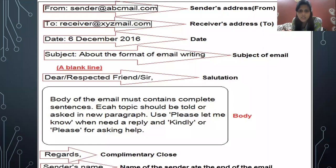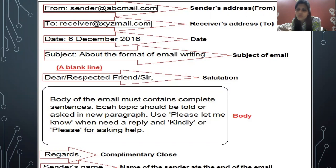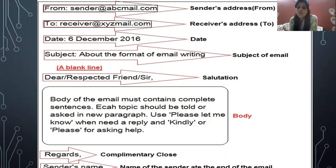Here again is the format of writing an email. You can see: From — the sender's ID (person's name @ email provider), To — the receiver's email ID. Then instead of writing CC or BCC you can write Date, then the subject. Salutation: 'Dear Sir,' 'Dear Ma'am,' or 'Dear [friend's name],' 'Dear Grandma,' 'Dear Mom,' whatever is applicable. The body of the email must contain complete sentences. Each topic should be told or asked in a new paragraph — wherever you want to talk about something new, generate a new paragraph. Be careful to use the words 'please' and 'kindly,' and be very humble in formal writing. At the end, write regards.